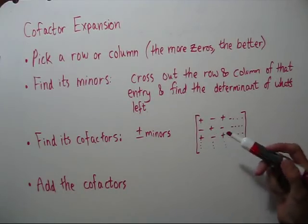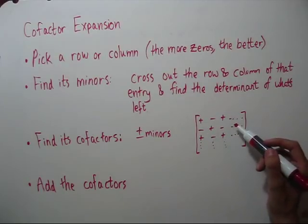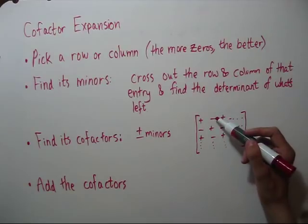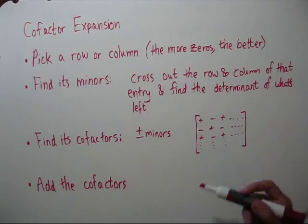Then we need to find what's called the cofactors. And that's either 1 times the minor or negative 1 times the minor. You find where your corresponding entry is on a matrix that alternates positive and negative. If it's a minus, then you multiply your minors by negative 1. Otherwise, just leave it.